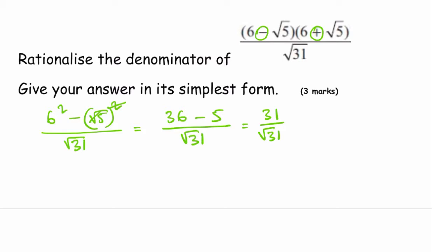All we have to do is rationalize it now. Multiply top and bottom by root 31. That will leave us with 31 root 31 over 31. Again, 31 and 31 cancel out, so that leaves us with just root 31. And that's the simplest form, worth 3 marks.